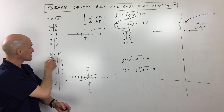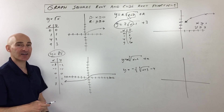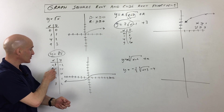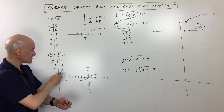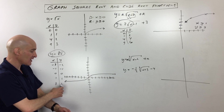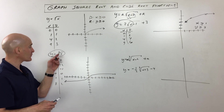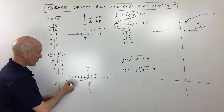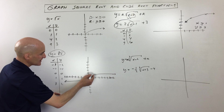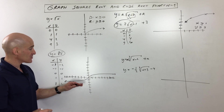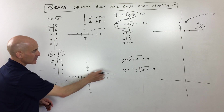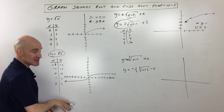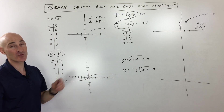The parent function for the cube root function is y equals cube root of x. I picked easy values where you get an integer output: cube root of negative eight is negative two, cube root of negative one is negative one, cube root of zero is zero, cube root of one is one, cube root of eight is two. What's different from the square root function is you can take the cube root of a negative number. Plotting those points gives an S-shaped graph. The domain and range are both all real numbers.